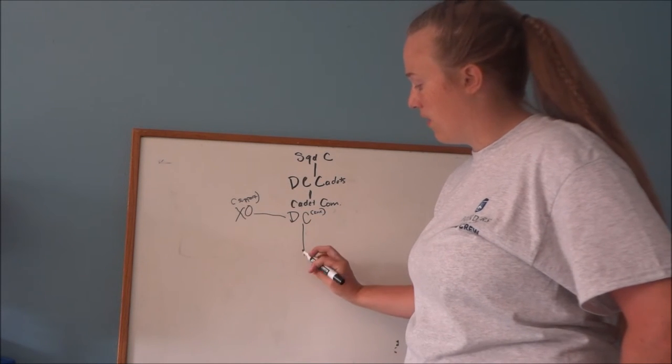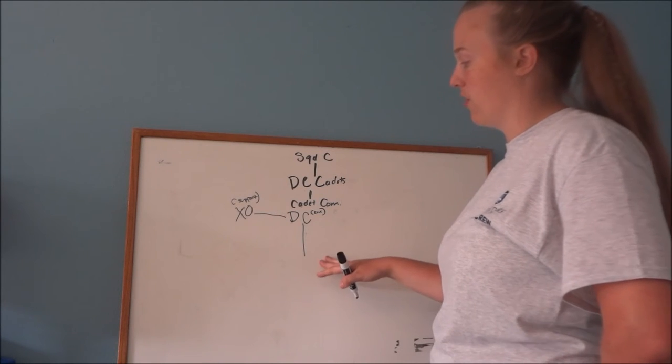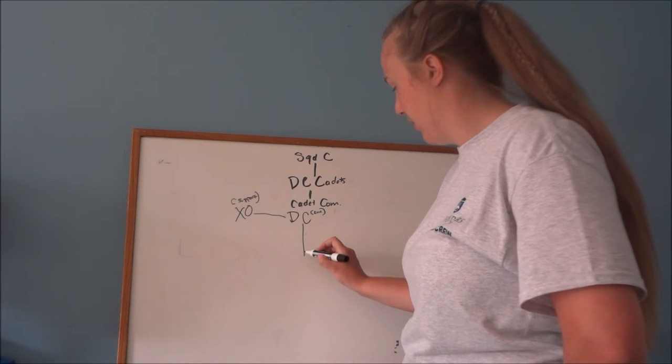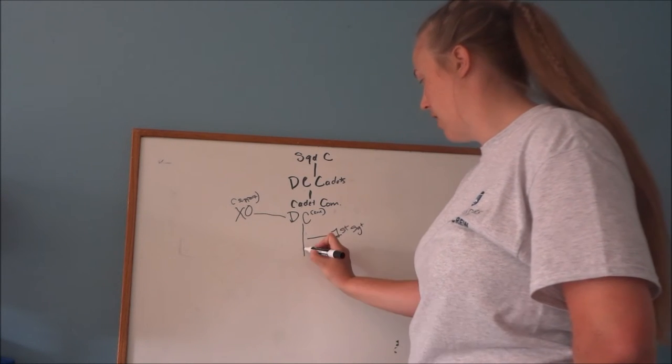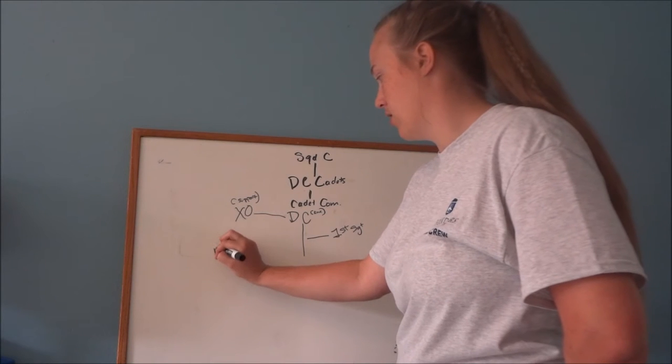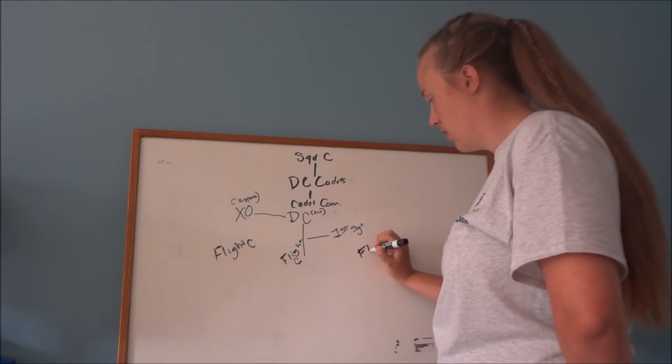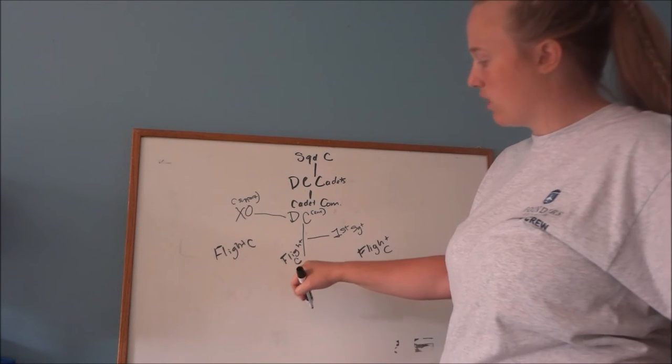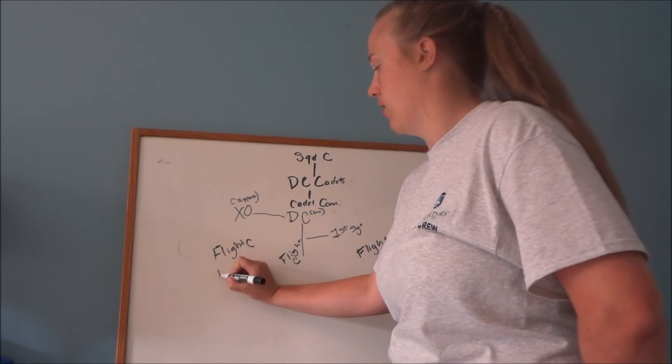From your DC, you then have first sergeants and flight commanders. So the way I like to do it is you have the first sergeant and then you have flight commanders. While the first sergeant isn't necessarily in charge of the flight commanders, they oversee the flight sergeants which go with each flight commander.